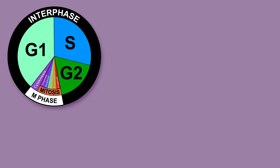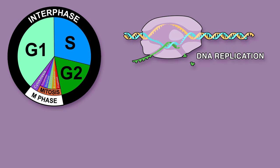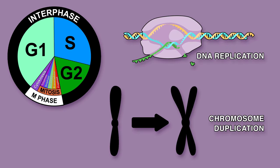Taking place between G1 and G2, S phase is when DNA replicates and chromosomes duplicate. It is critical that this replication is accurate, and that every nucleotide is copied exactly once.